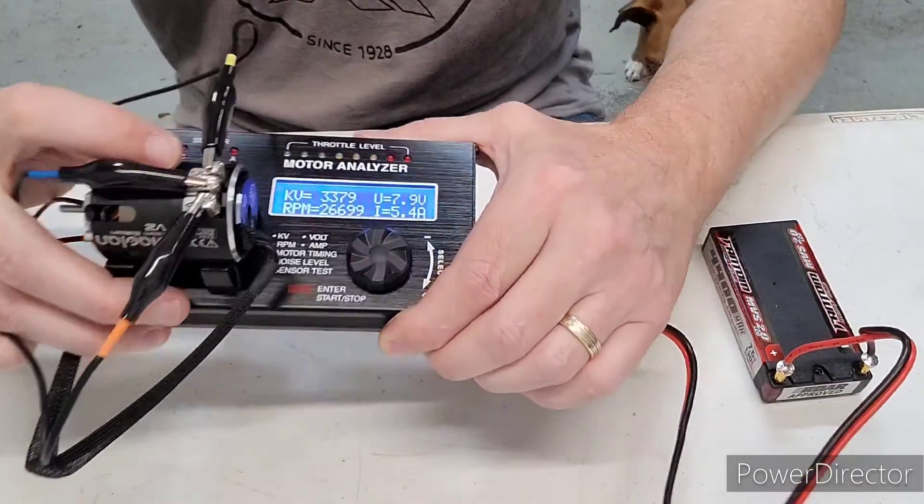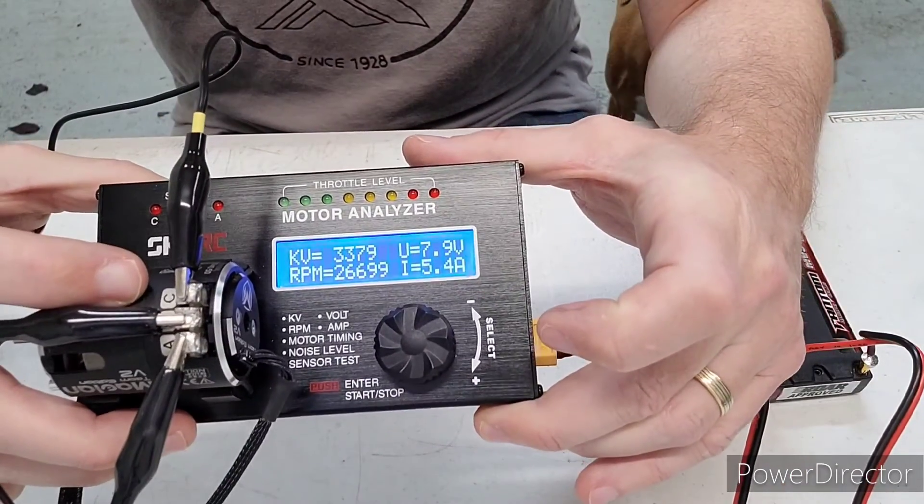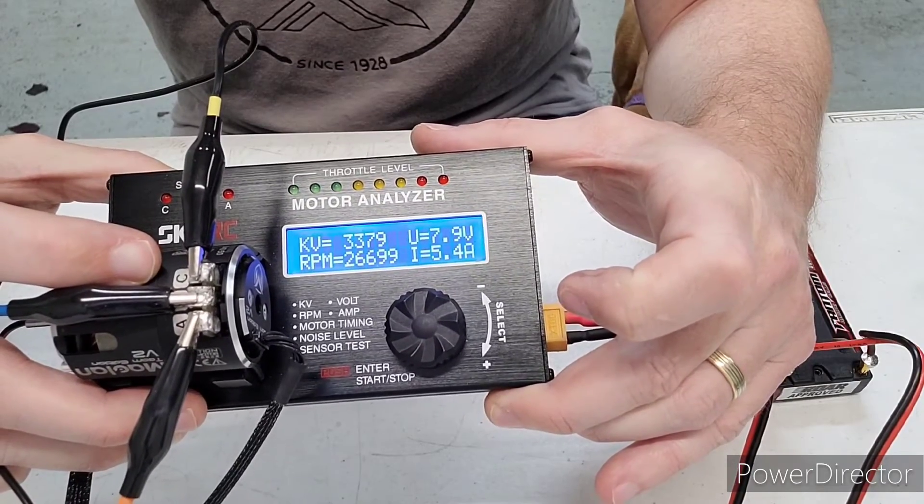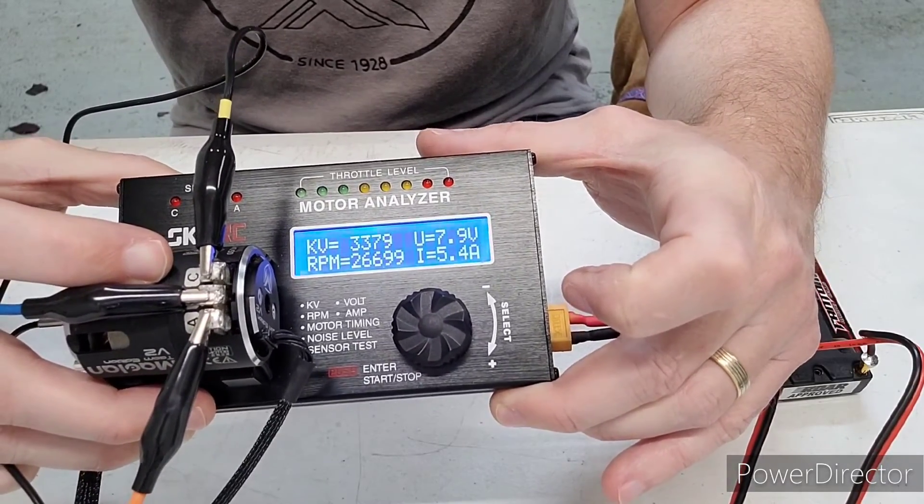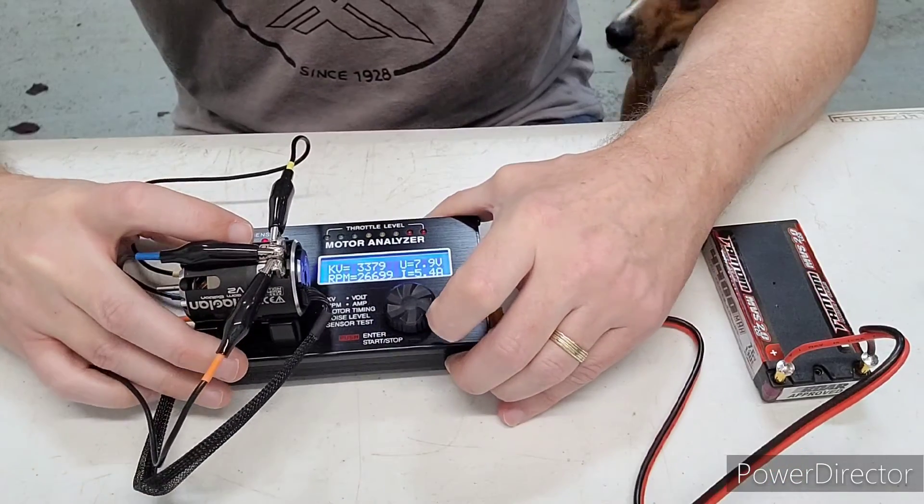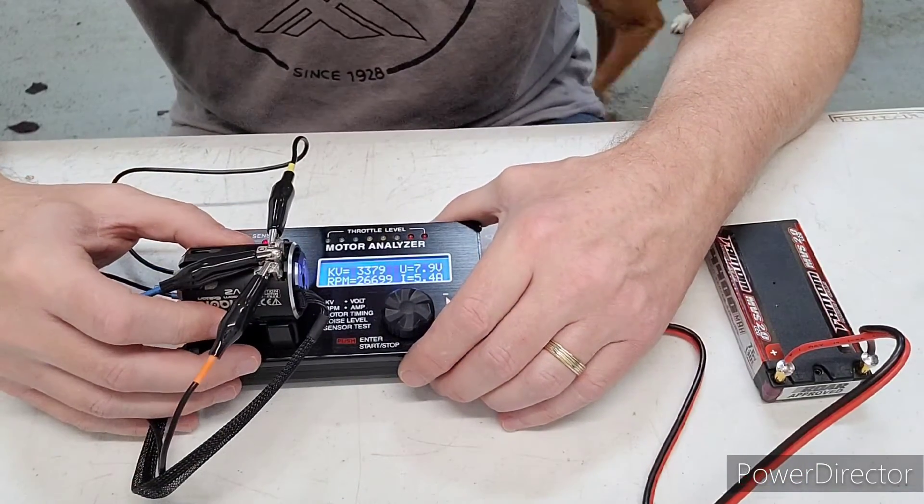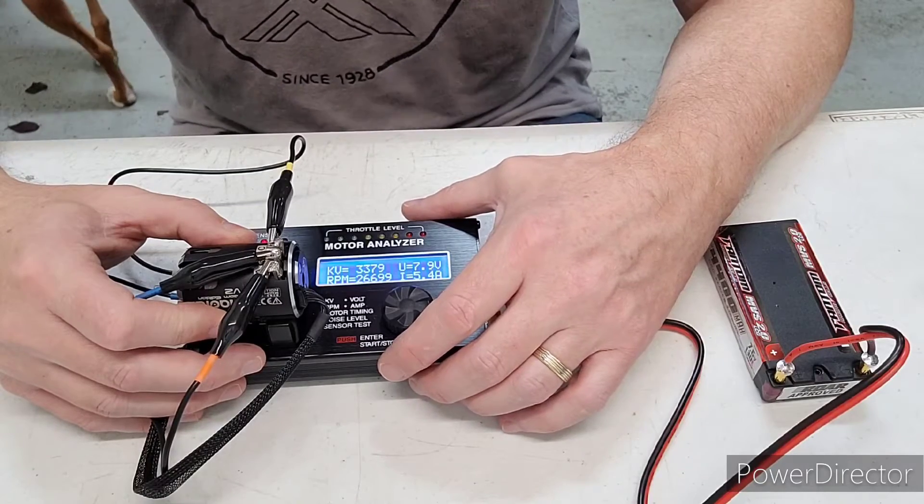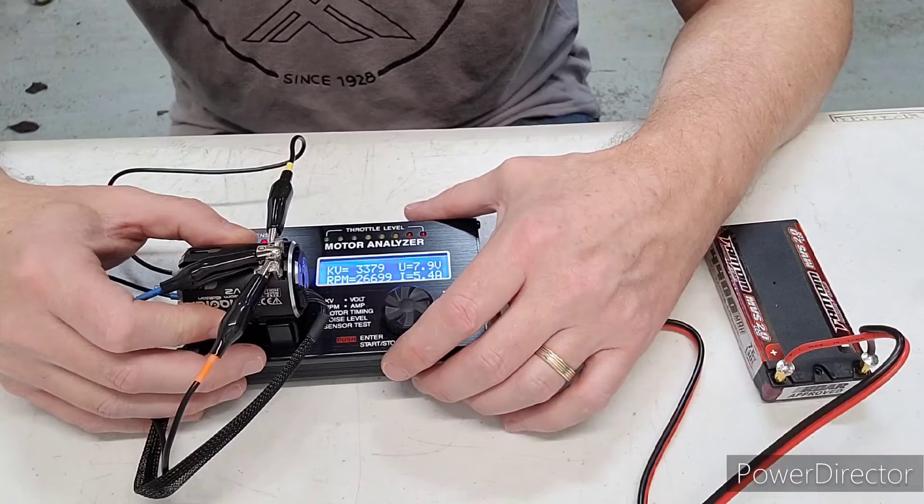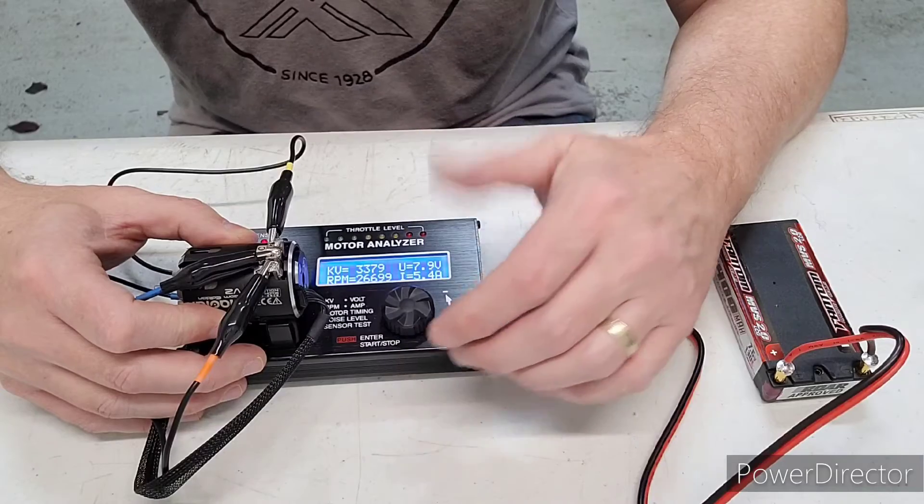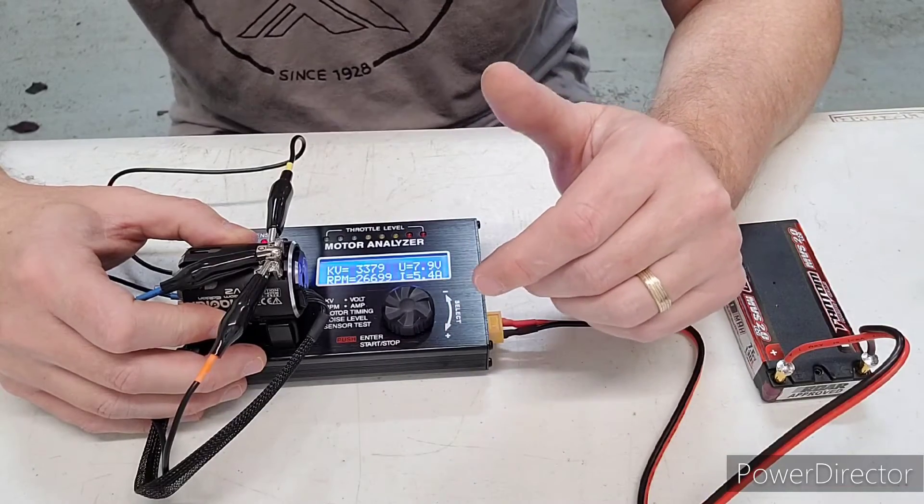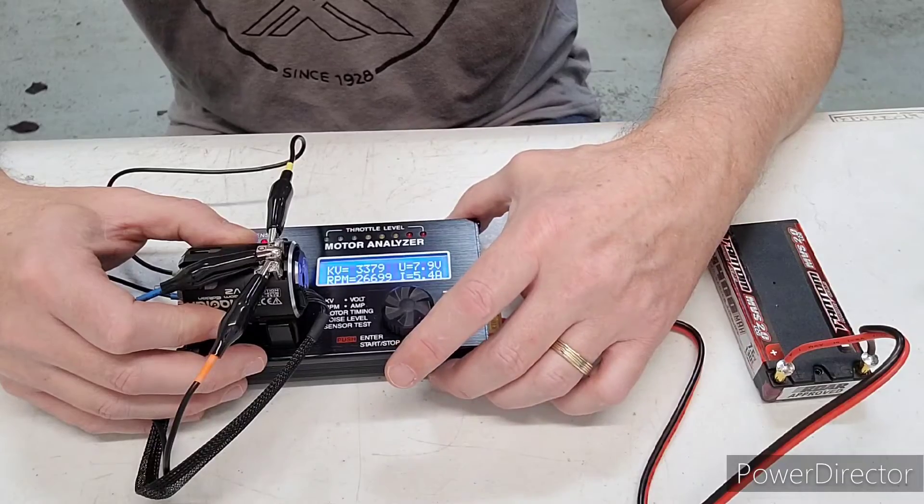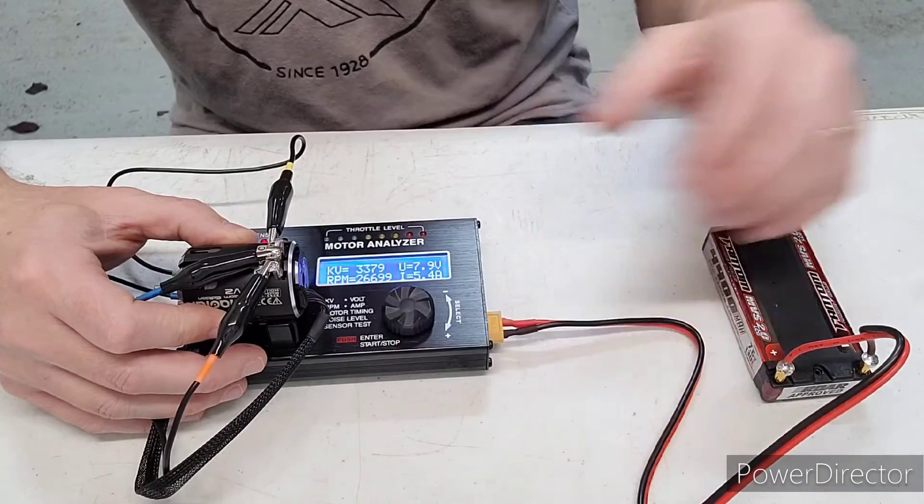But as you can see, once you finish that here on the motor, it gives you KV RPM, the voltage of the battery and the current draw to get here. So this thing is at 3379 KV, 26,699 RPM. The voltage of the battery is at 7.9 volts and the current is at 5.4 amps.